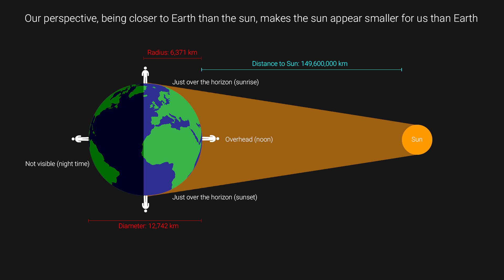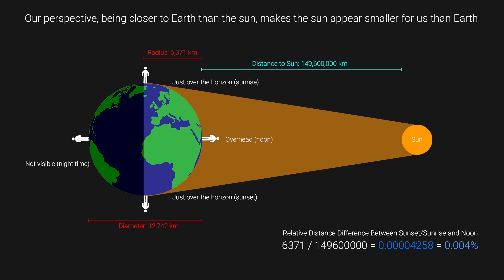We know from scientific calculations that the sun is, on average, 149.6 million kilometers away and that Earth has a diameter of about 12,742 kilometers, giving a radius of 6,371 kilometers. The difference between the noon position and the sunrise/sunset positions is equivalent to Earth's radius — 6,371 km. Dividing 6,371 by 149.6 million gives 0.00004258, or a difference in distance to the sun of just 0.004%. This is the equivalent of looking at a house one kilometer away and moving 4.2 centimeters closer — too subtle a change for the naked eye. This explains why the sun doesn't change size and why it crosses the horizon rather than reducing to a dot and vanishing, as flat Earth suggests.